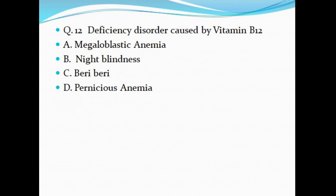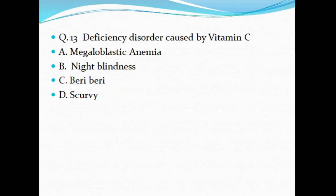Question 12: Deficiency disorder caused by Vitamin B12 — A. Megaloblastic anemia, B. Night blindness, C. Beriberi, D. Pernicious anemia. Question 13: Deficiency disorder caused by Vitamin C — A. Megaloblastic anemia, B. Night blindness, C. Beriberi, D. Scurvy. I have already given the answers to all of these questions in my lecture on mnemonics of deficiency disorders.